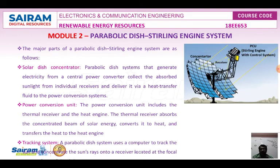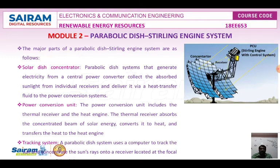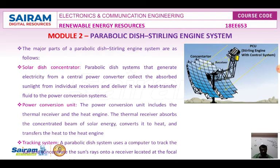The Stirling engine is the most common type of heat engine used in the dish engine system. The tracking system uses a computer to track the sun and concentrate the sun rays onto the receiver located at the focal point. The Stirling engine, linked to the receiver, generates electricity. The parabolic dish generates around 1000°C, while the heliostat generates up to 2000°C at the receiver, but the efficiency for conversion of solar energy into electricity is very high.